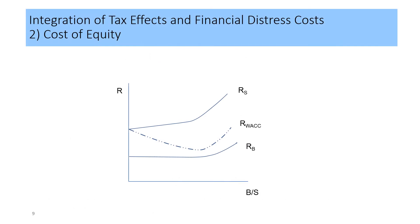Next, we will learn how the integration of tax effects and financial distress costs affects the cost of equity. The line RS is upward-sloping. At low debt-to-equity levels the slope is flatter; however, the slope becomes steeper when the debt-to-equity ratio is high. This is due to financial distress costs.